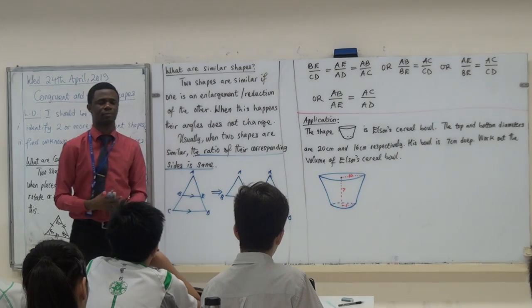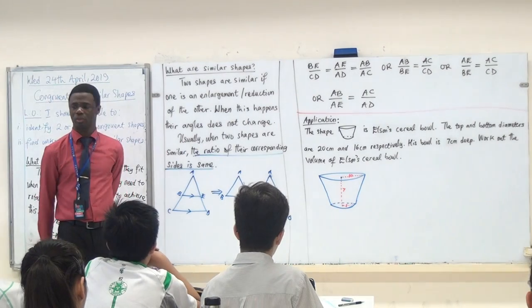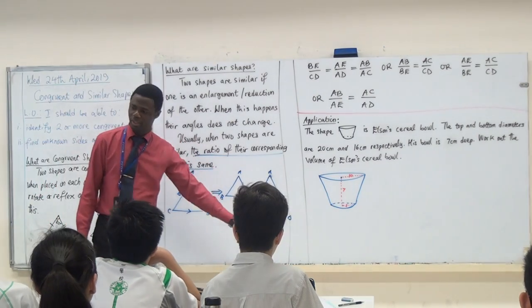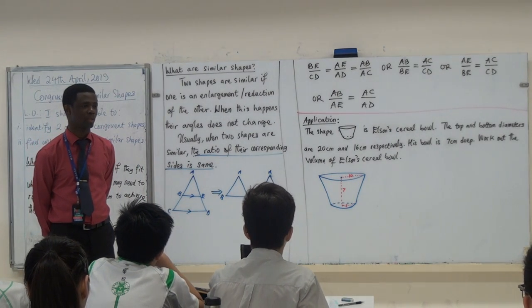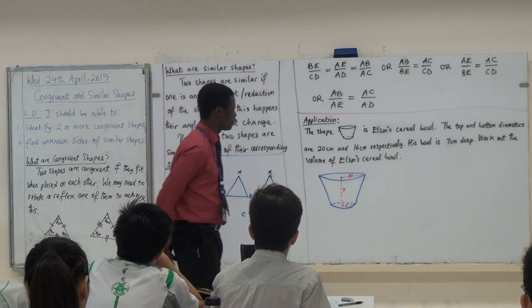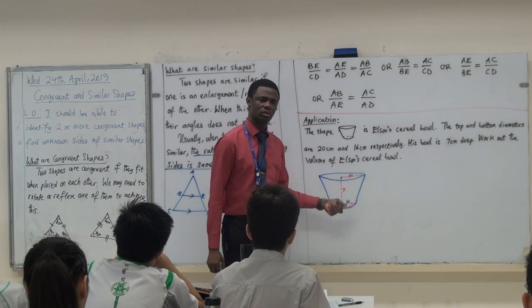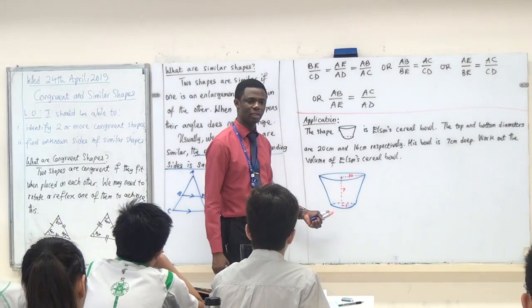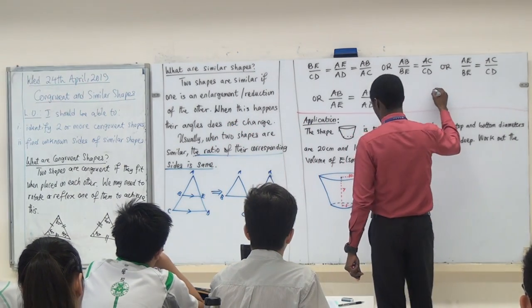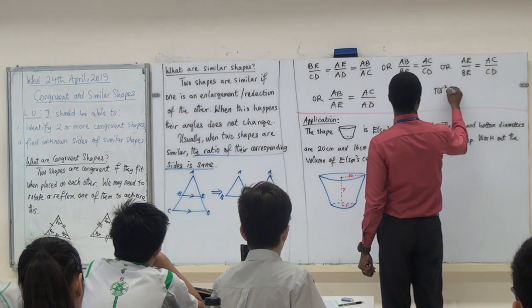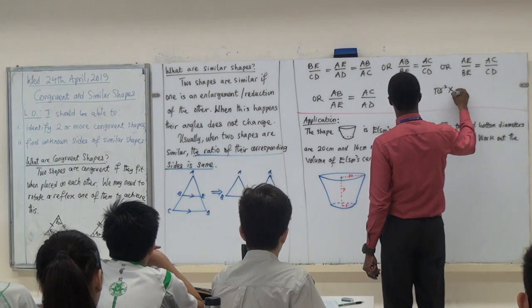So you were saying find the average and find the area. Who agrees with that? Are you agree with that? So if we find the average of the, that would be 9. Alright? So we find, we use 9 as our radius, then we do pi r squared times what? H.